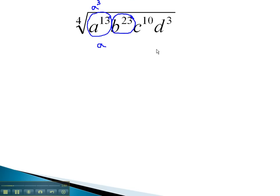Similarly, with the b to the 23rd, to decide how many b's come out, we do 23 divided by 4, which is 5. However, there is a remainder of 3. This means b cubed remains in the radical.